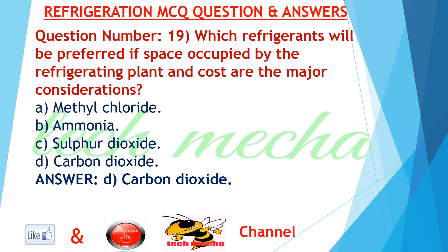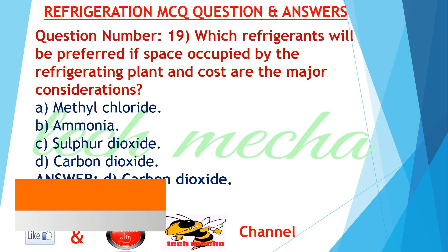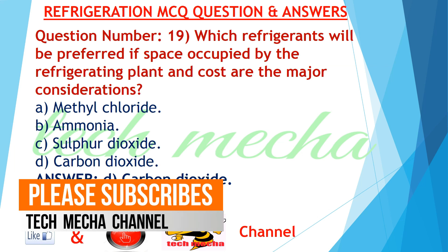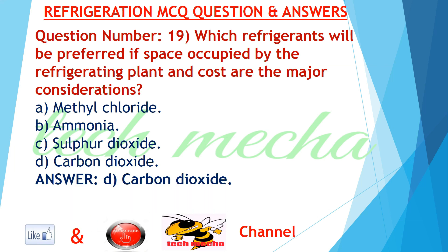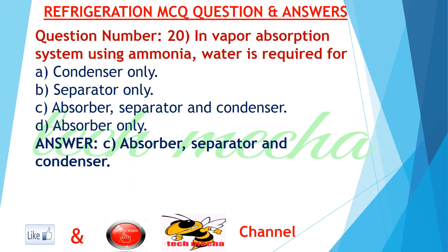Question number 19: Which refrigerant will be preferred if space occupied by the refrigerating plant and cost are the major considerations? A. methyl chloride, B. ammonia, C. sulfur dioxide, D. carbon dioxide. Answer: D. carbon dioxide.